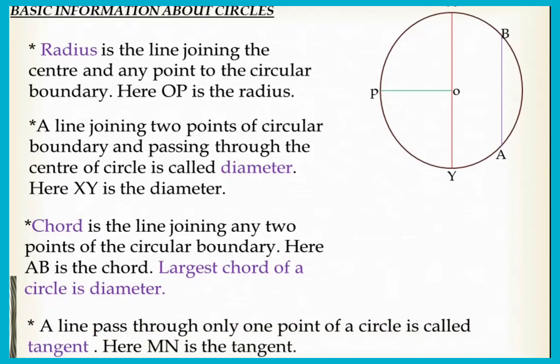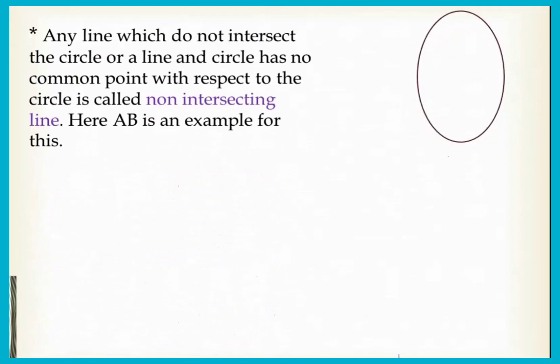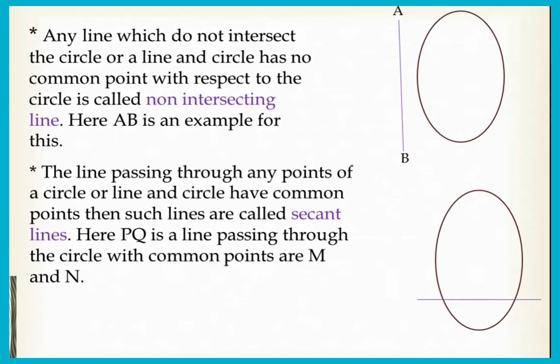A line passing through only one point of a circle is called the tangent. Here MN is the tangent. Any line which does not intersect the circle, or a line and circle has no common point with respect to the circle, is called the non-intersecting line. Here AB is an example for this.